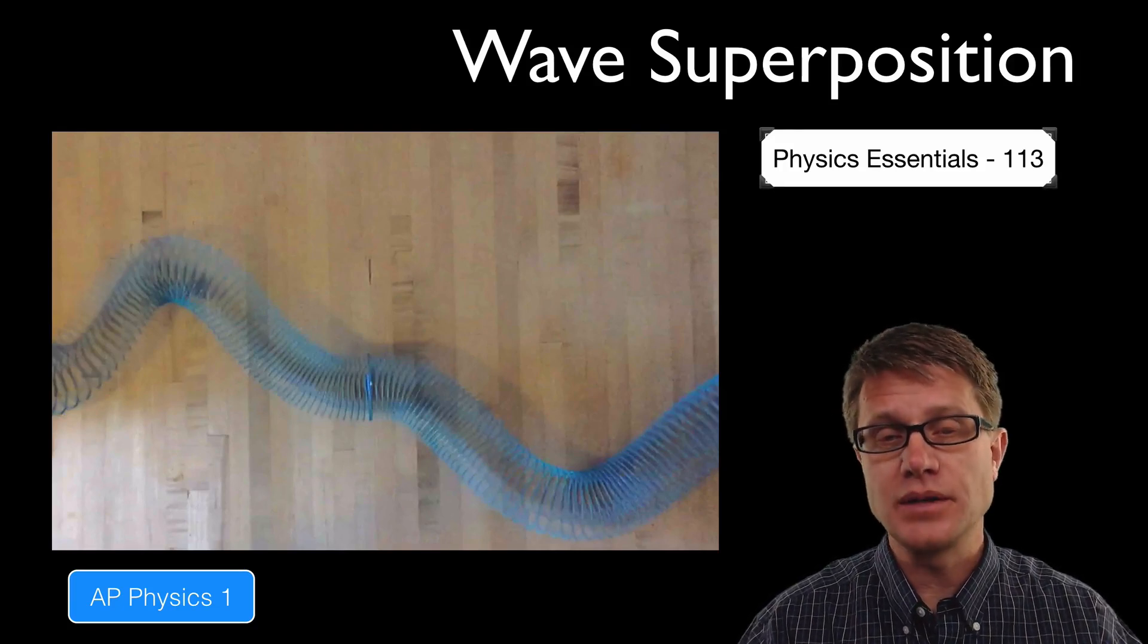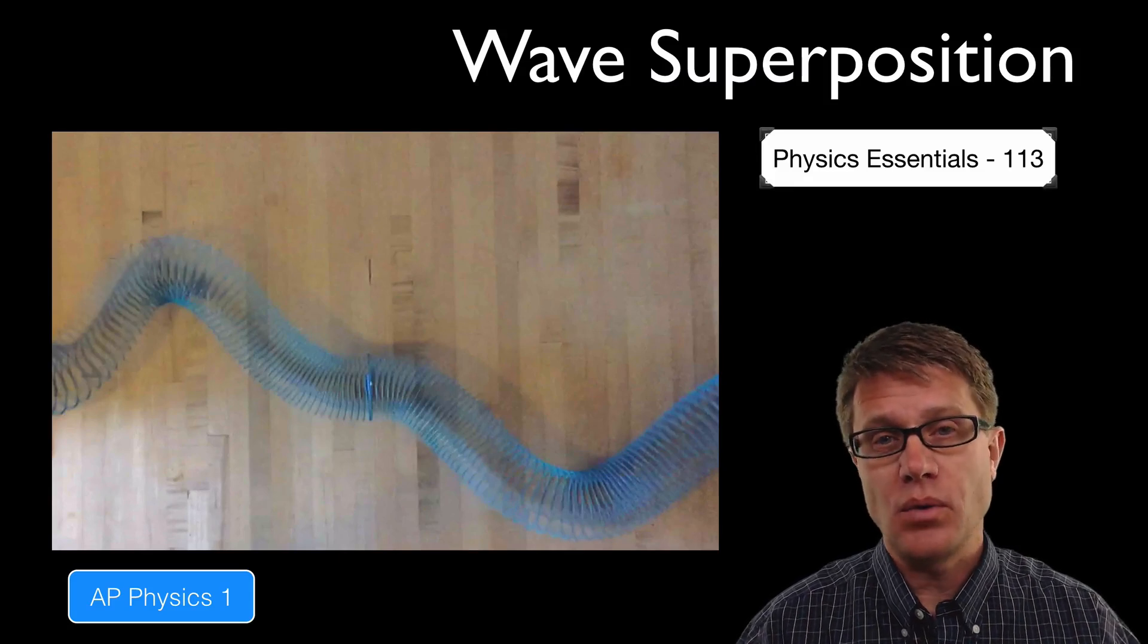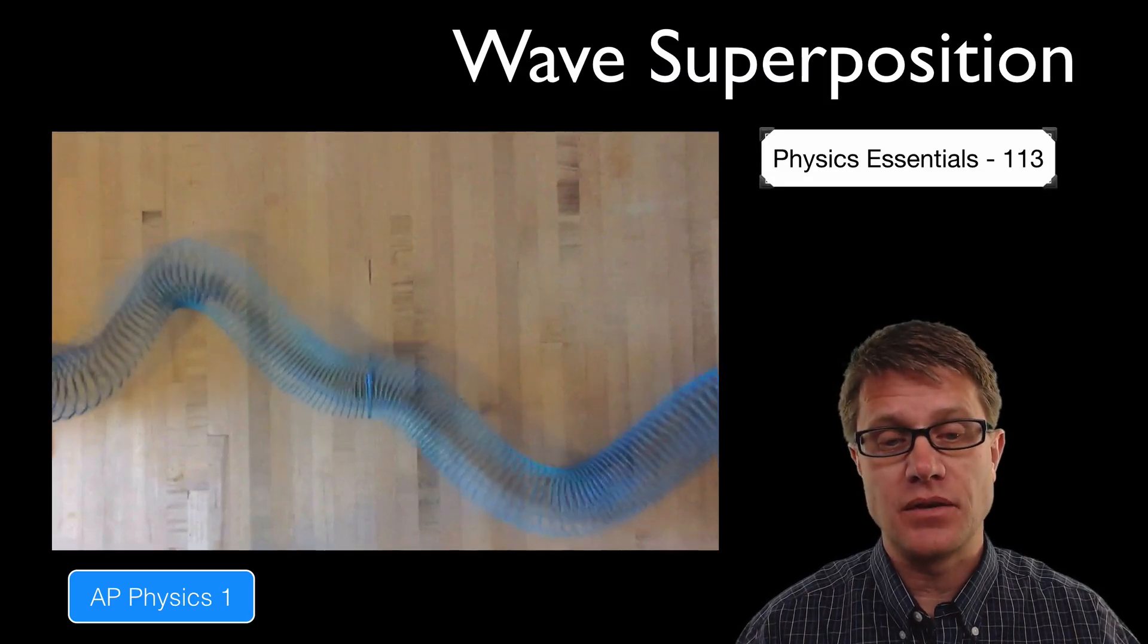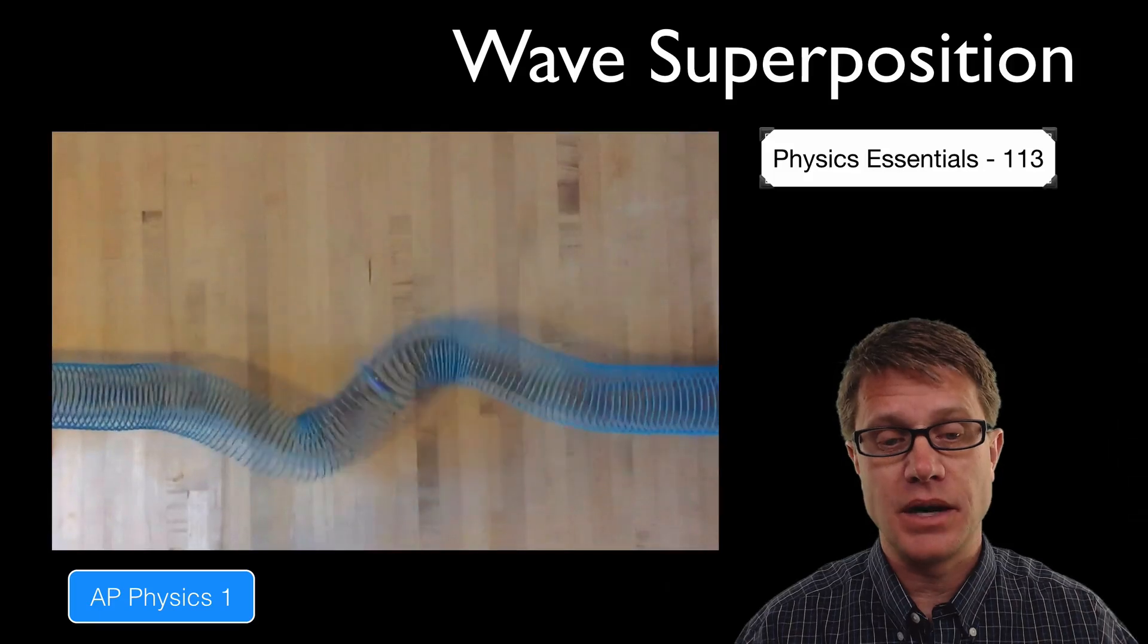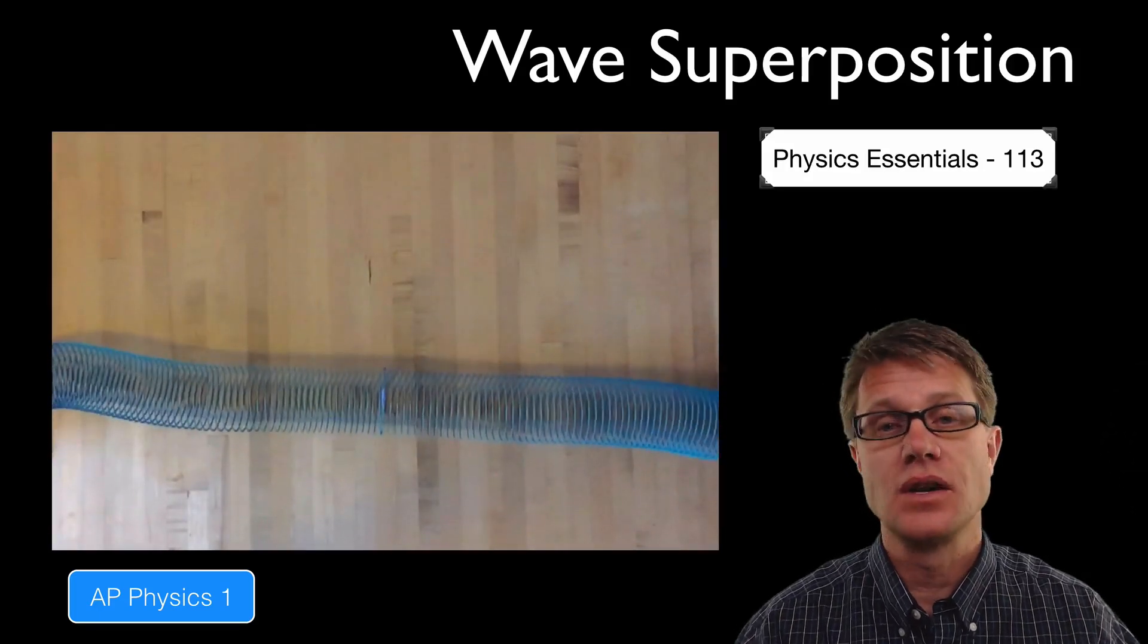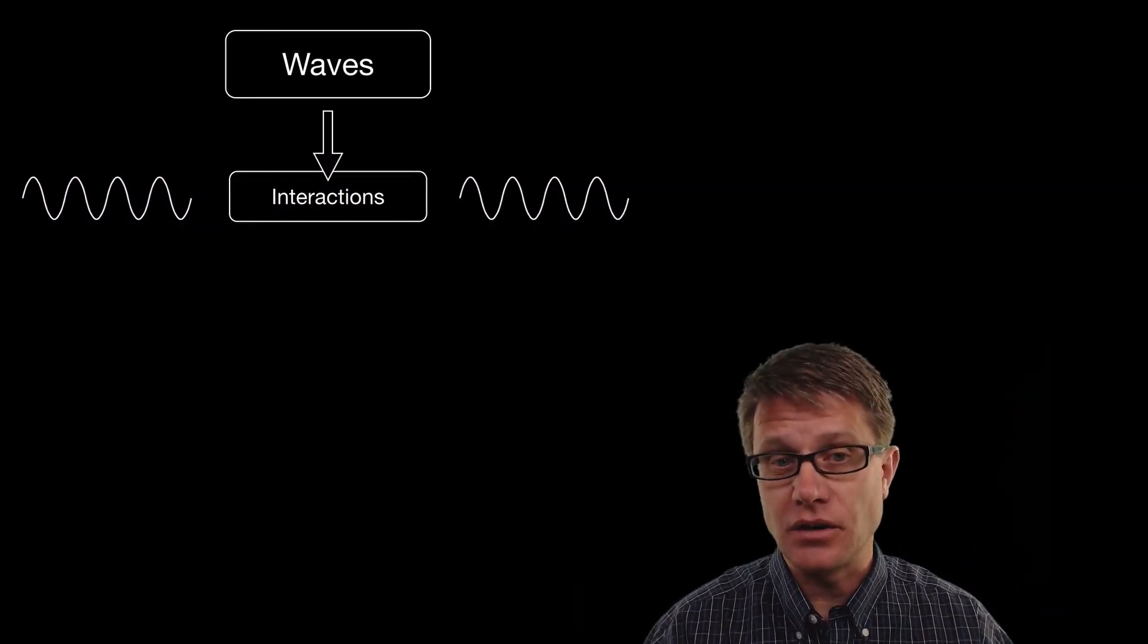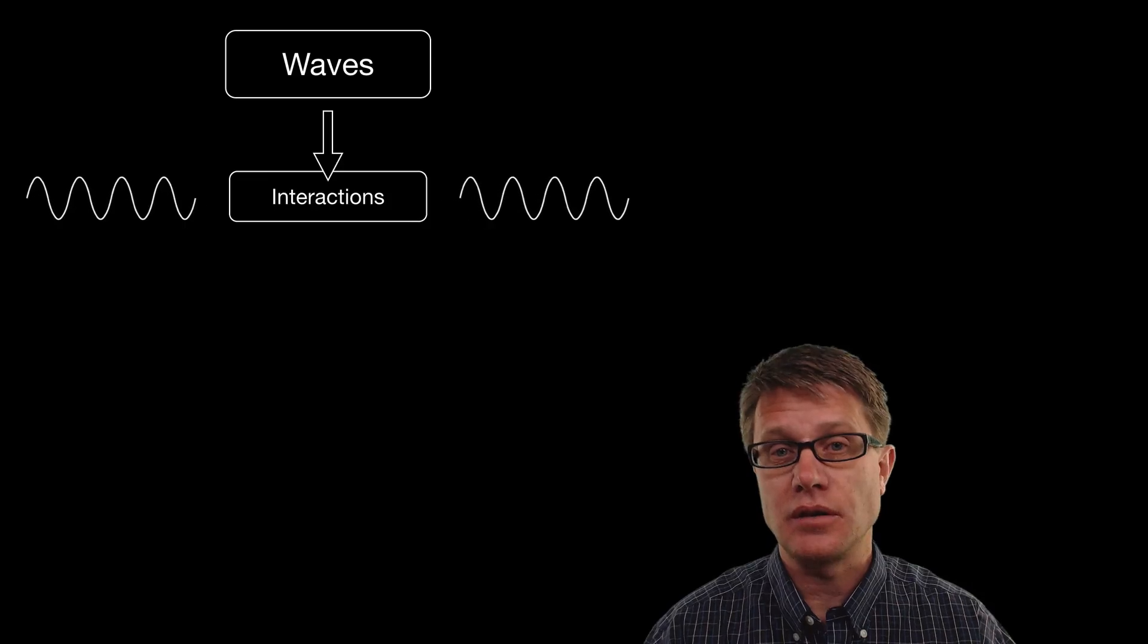And so if you watch that point in the middle it will not move up or down very much at all. But watch what happens to those waves after they hit. The one on the bottom continues to the left on the bottom, and the one on the right continues on the right. And so when waves interact they do not bounce off each other. They will move right through each other.